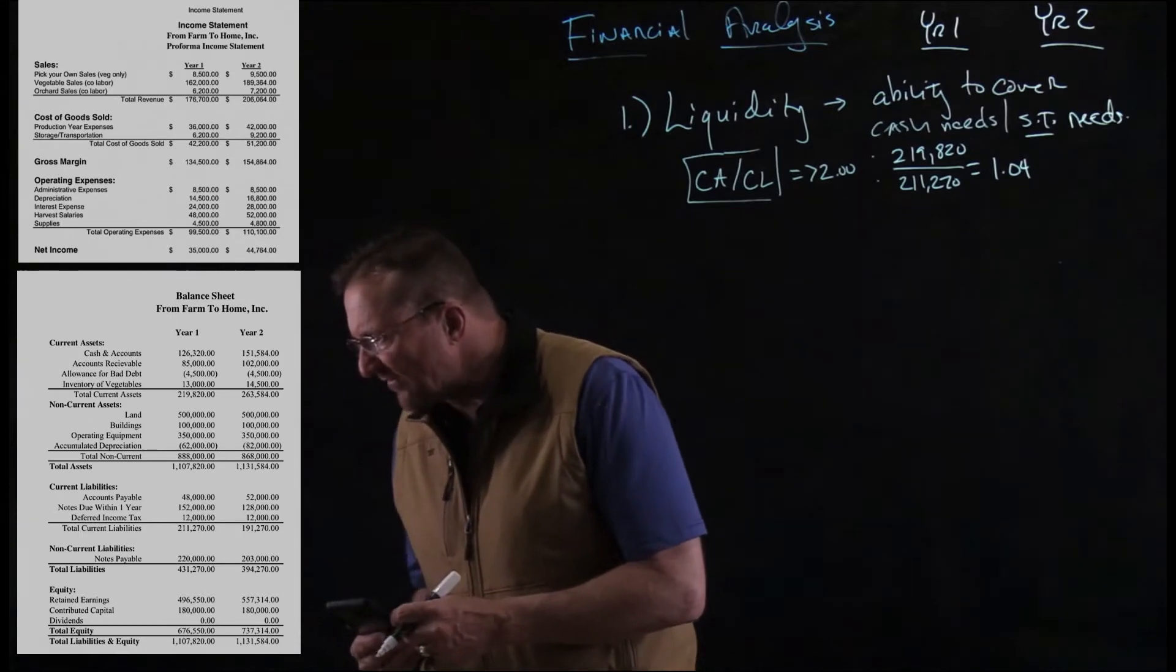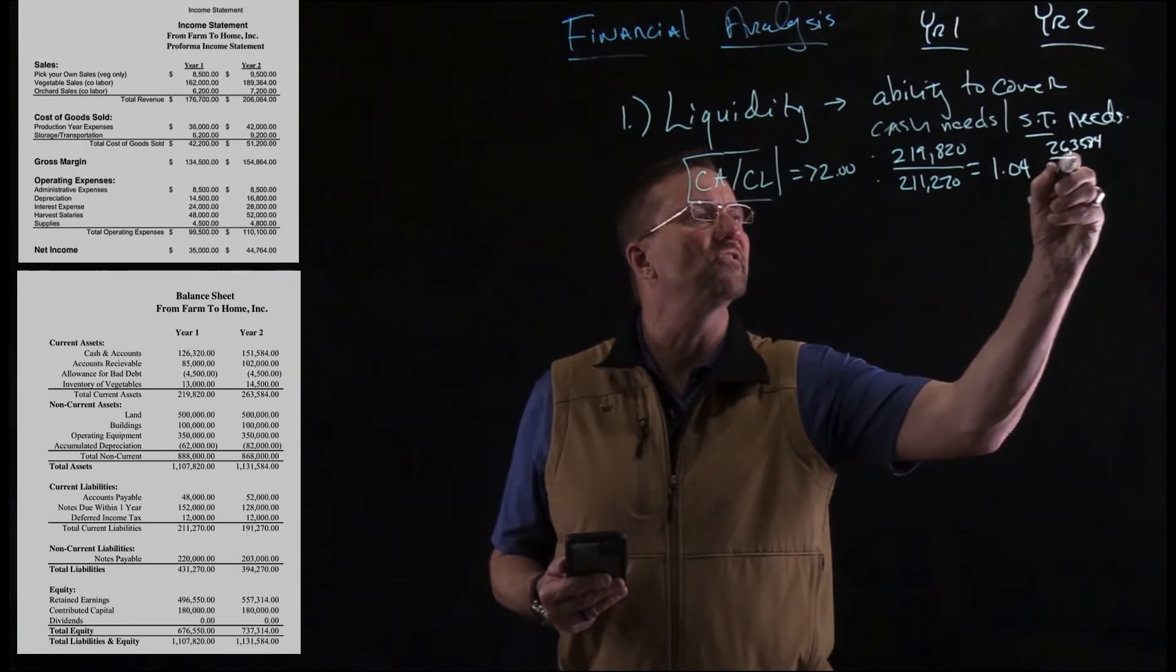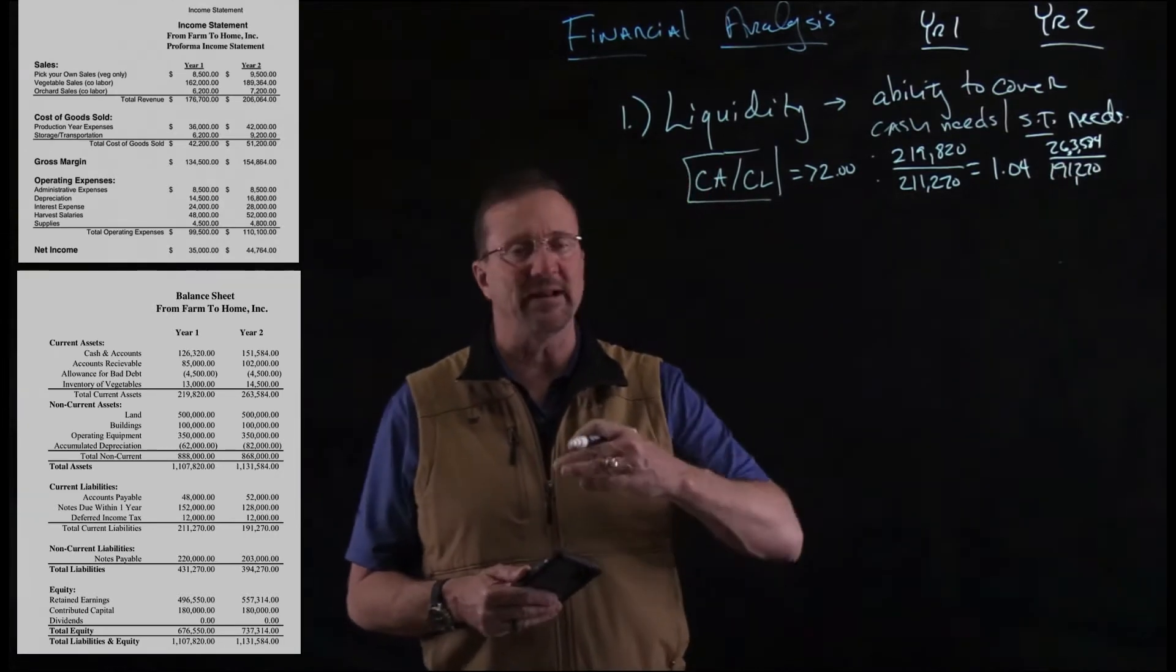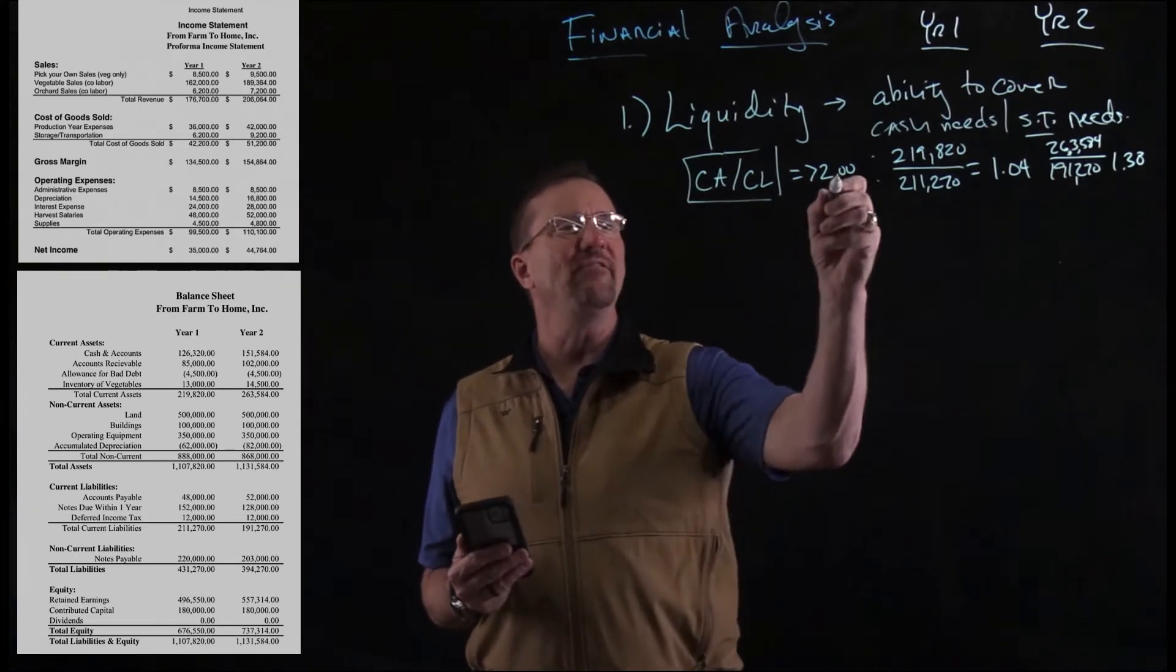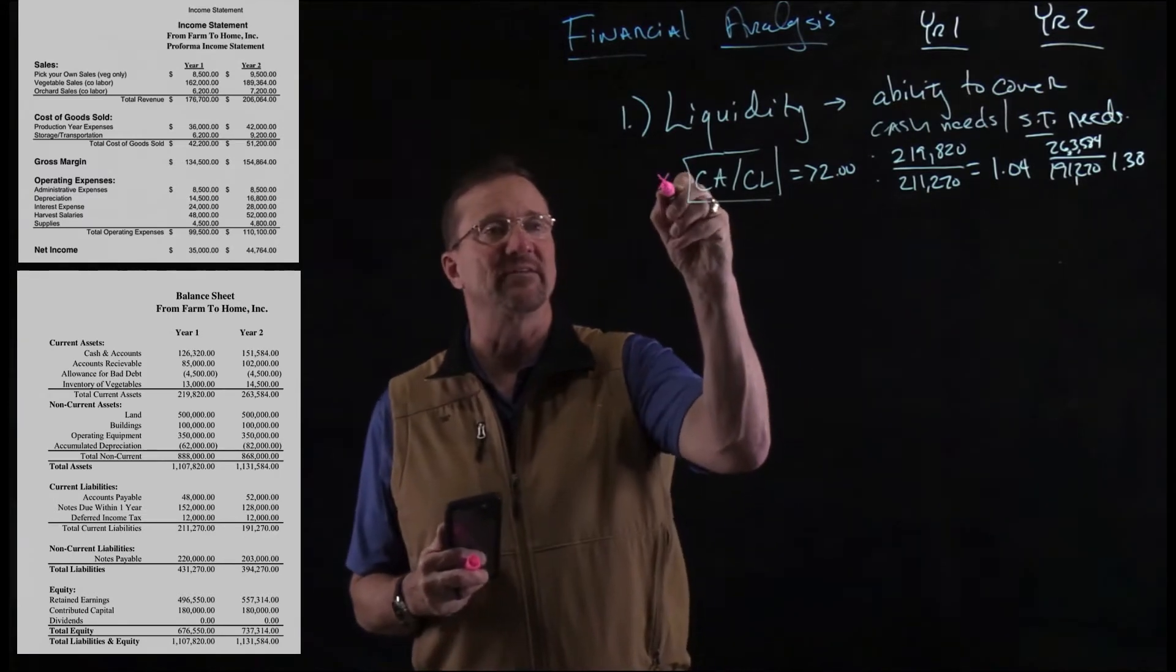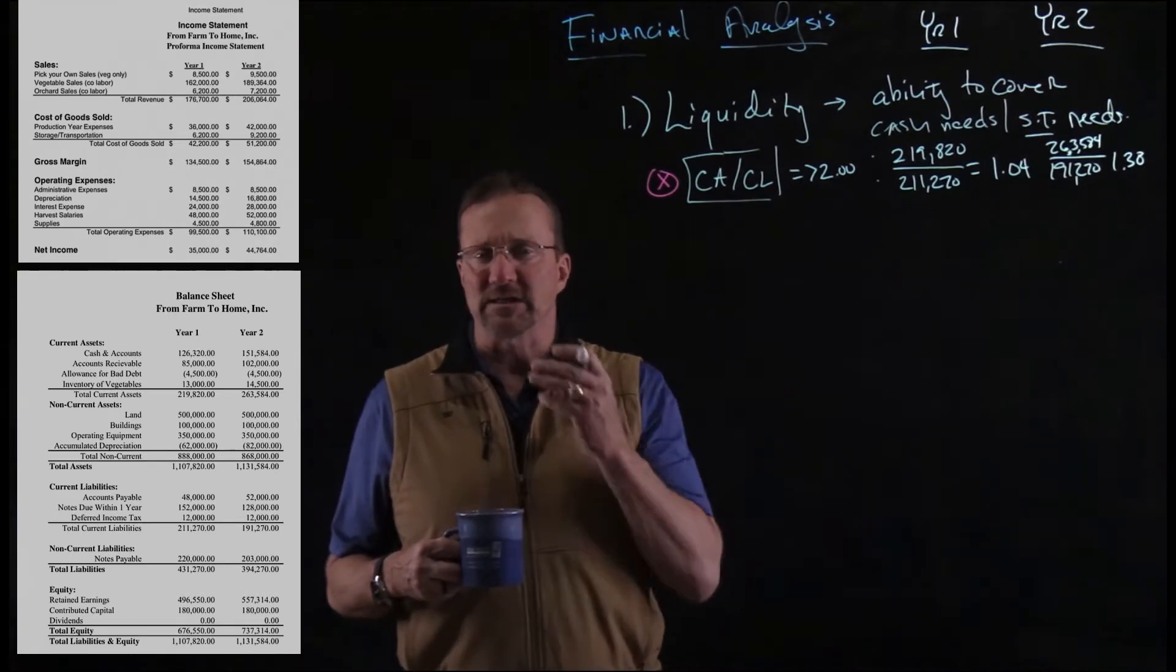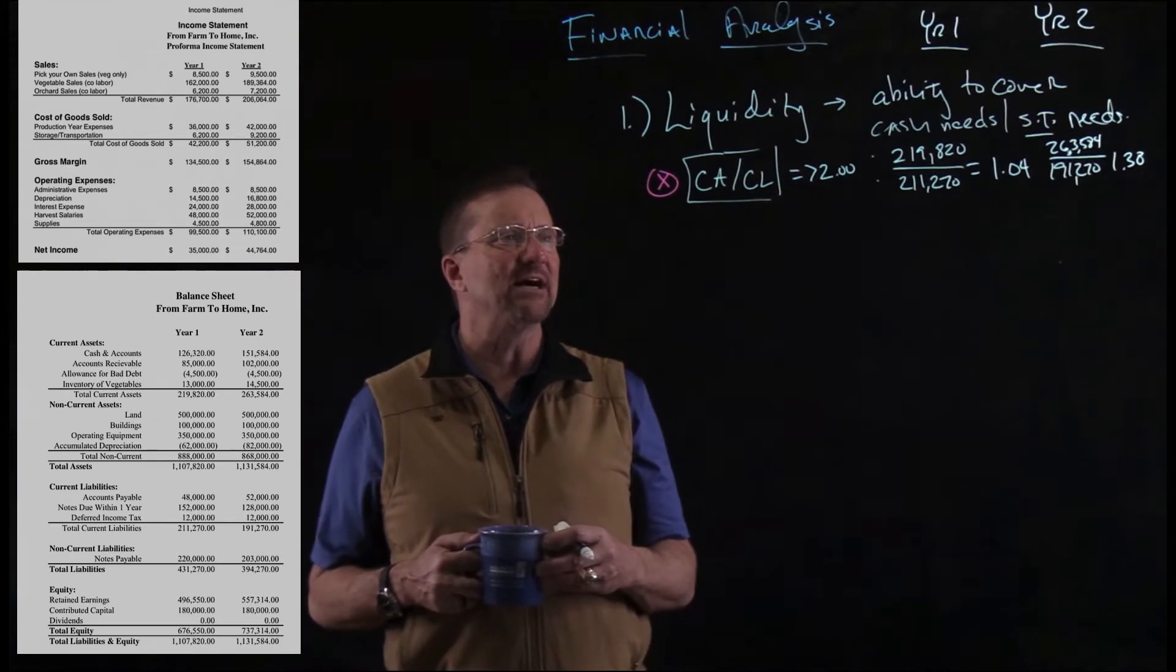So in year two, we're going to have current assets of 263,584, and we've got current liabilities this time of 191,270. So it's obvious to see that we've actually expanded our current assets. And when we do that ratio, the answer is 1.38. So we've improved, but have we met our 2.0 rating? The answer there is no, we haven't. And so that's kind of a problem for us in this particular analysis here. All right. So liquidity and we were looking at this company, we might decide this company sure looks like they're in a spot that doesn't look like they have a lot of extra current assets.